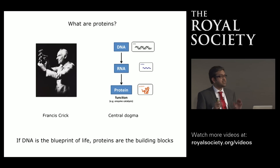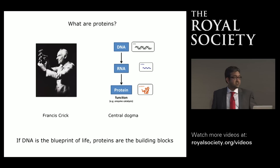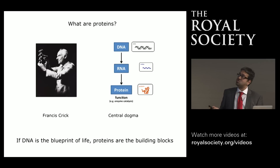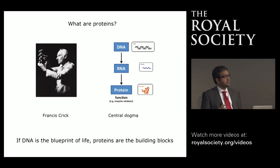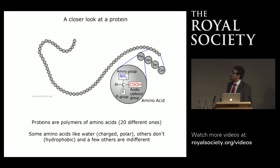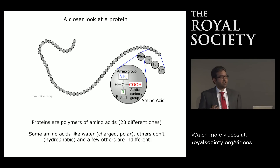Before I do that, I'd like to take a step back and talk about one of Francis Crick's major contributions: the central dogma. The central dogma states that the information encoded in the DNA is transcribed to make the mRNA, and this information is decoded by the ribosome to make the protein. So if DNA is a blueprint of life, then proteins are the building blocks. Proteins are polymers of amino acids—there are 20 different types, some hydrophilic and some hydrophobic. The different genes encoded in an organism code for proteins that differ in the sequence of these amino acids.